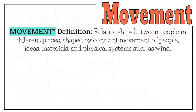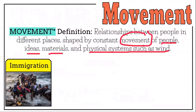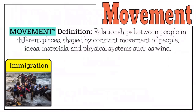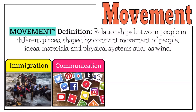The fourth theme of geography is movement. Movement examines the relationships between people in different places, shaped by the constant movement of people, ideas, materials, and physical systems such as wind. Movement includes immigration — people moving from one place to another and sharing ideas, religion, language, culture, and customs. It also includes communication: how do people in a region communicate? Does that country monitor or limit communication, like China monitoring Google searches and controlling the movement of ideas?